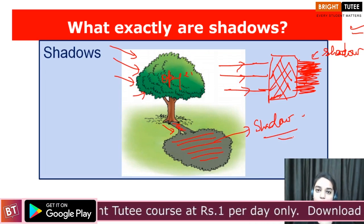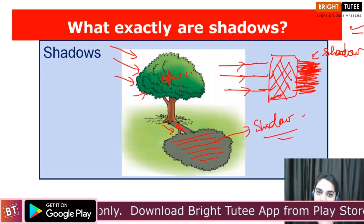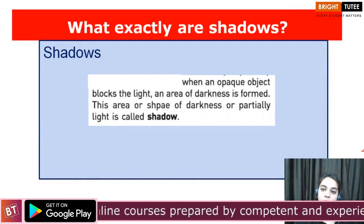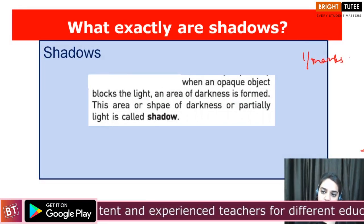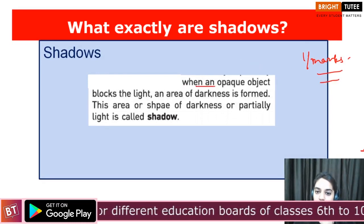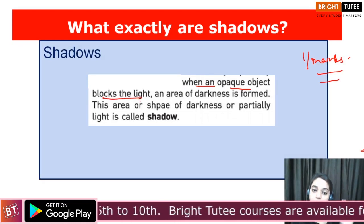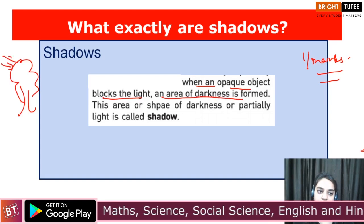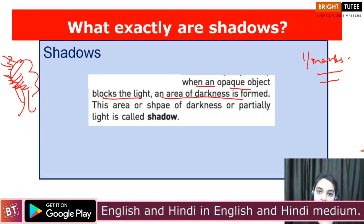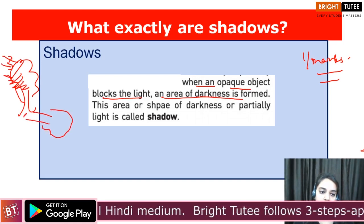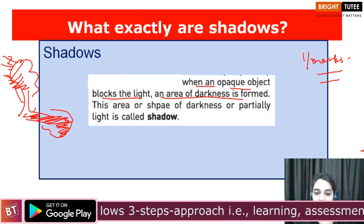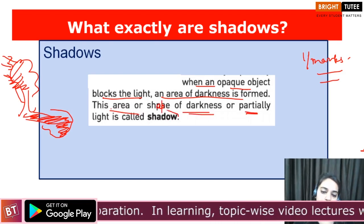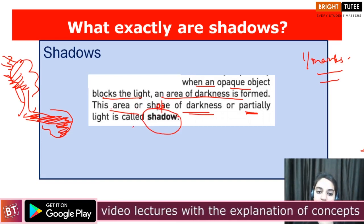In case you haven't understood it properly, we are going to discuss this shadow in detail in this session. So how do we define shadow? This question can come for around one mark or two marks. When an opaque object blocks the light, the area of darkness is formed. That is what we have studied in the case of the tree. When the light rays came towards the tree, the tree blocks the path of these rays and creates a dark patch — the area of darkness — which is known as the shadow. So this area or shape of darkness is called a shadow.